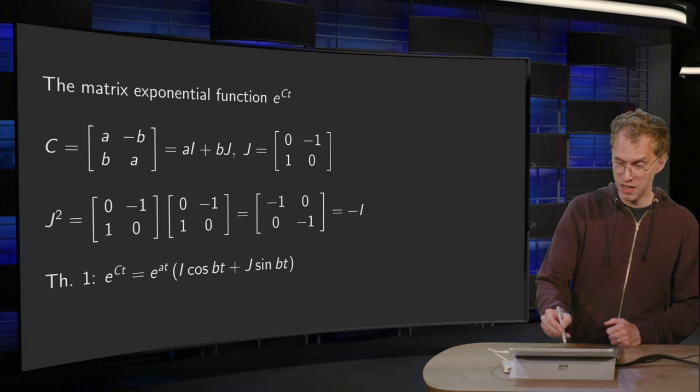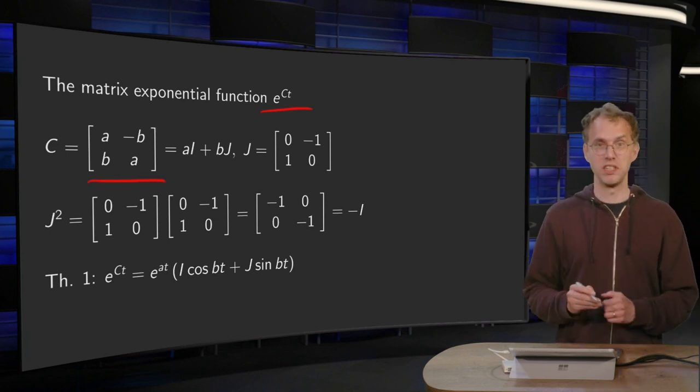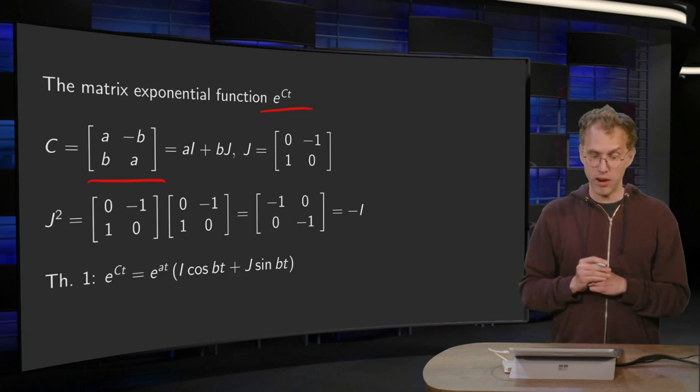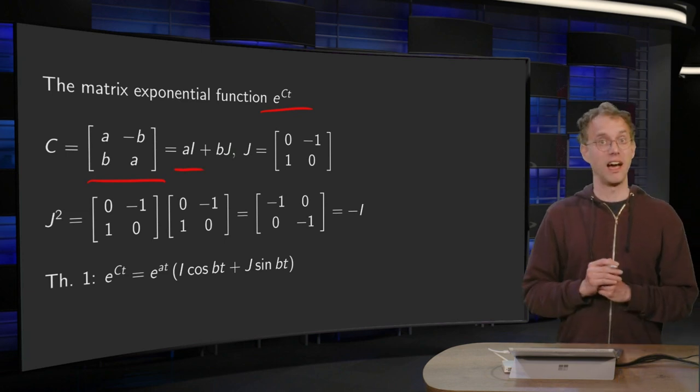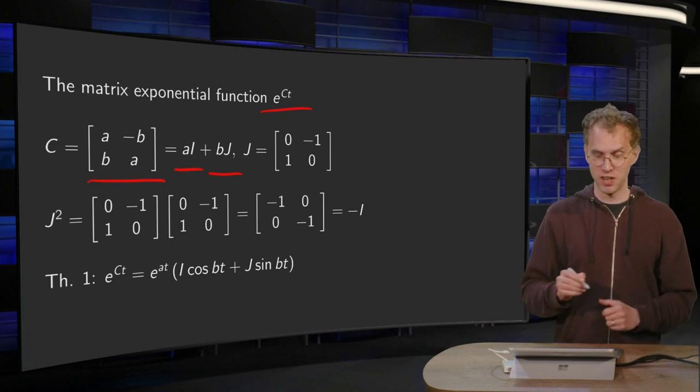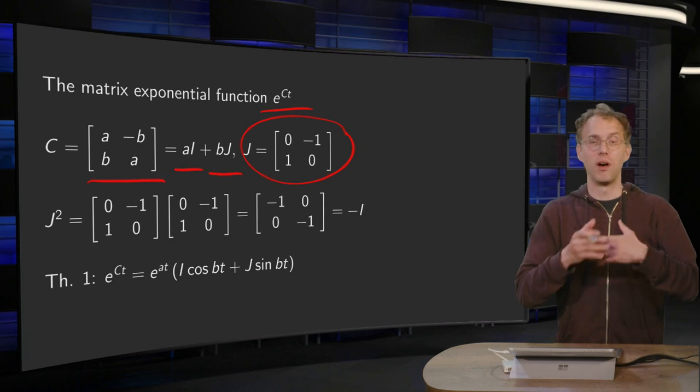So how do we compute e to the power ct? Well our C looks as a, b, minus b, a and we can write our matrix C as a sum of two matrices: a times an identity matrix plus b times the j matrix where j is this matrix over here. So far so good.